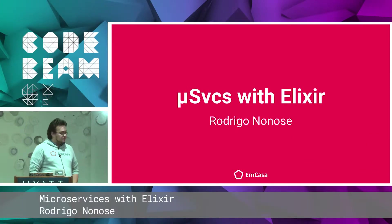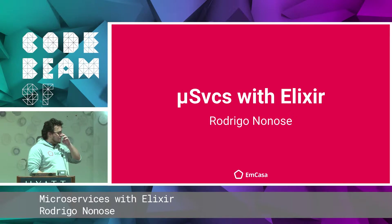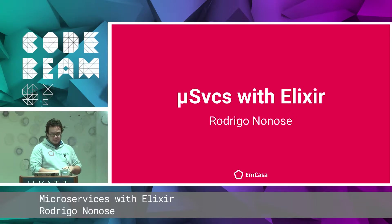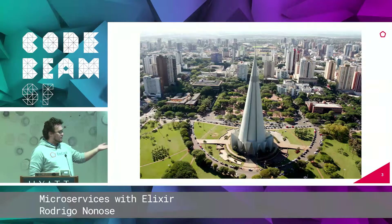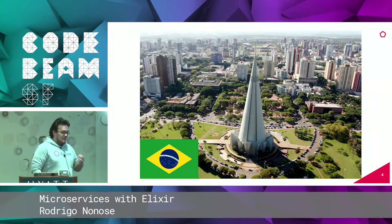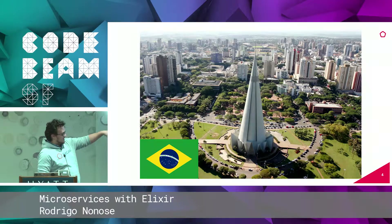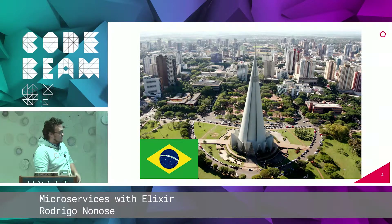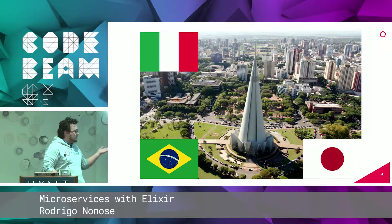My name is Rodrigo. I'm going to talk about microservices with Elixir. I'm from a city called Maringá — it's a small city in Brazil. There's a church there that's really tall and it's like the icon of the city. I'm half Italian and half Japanese, so whatever.